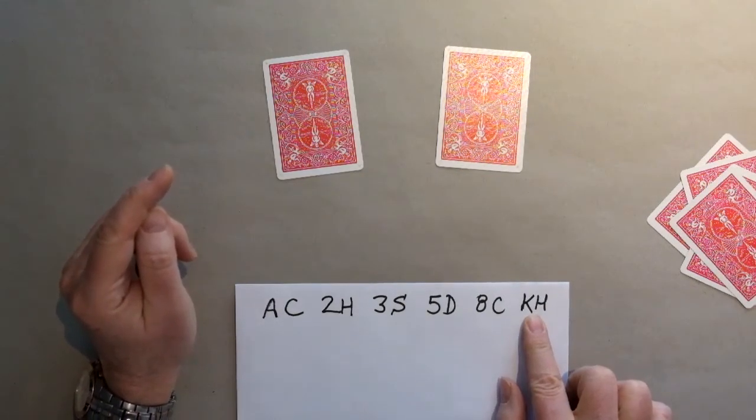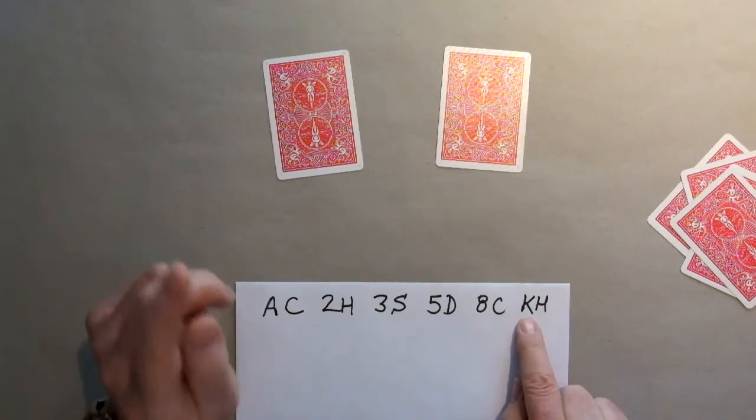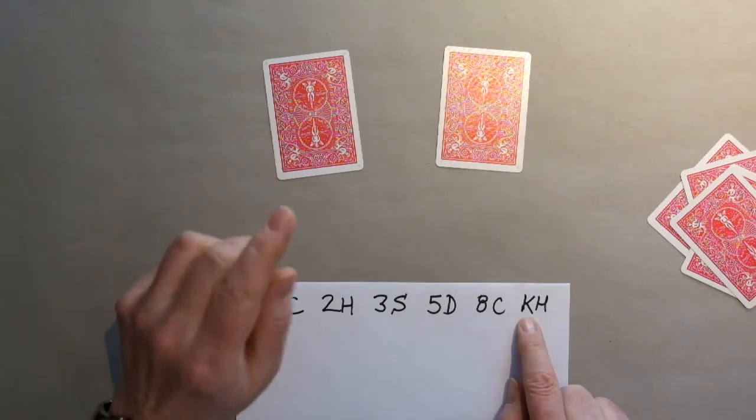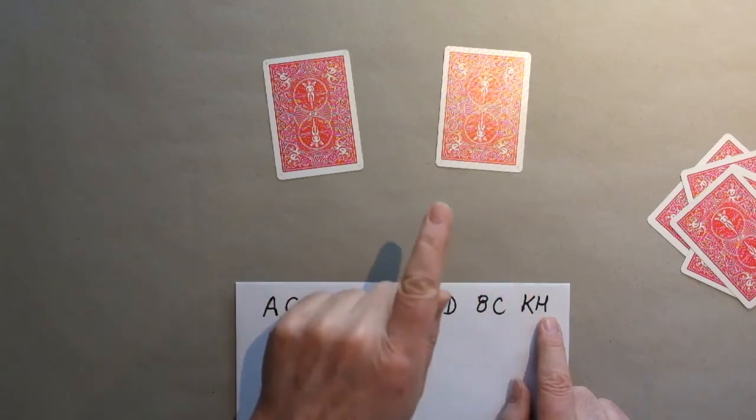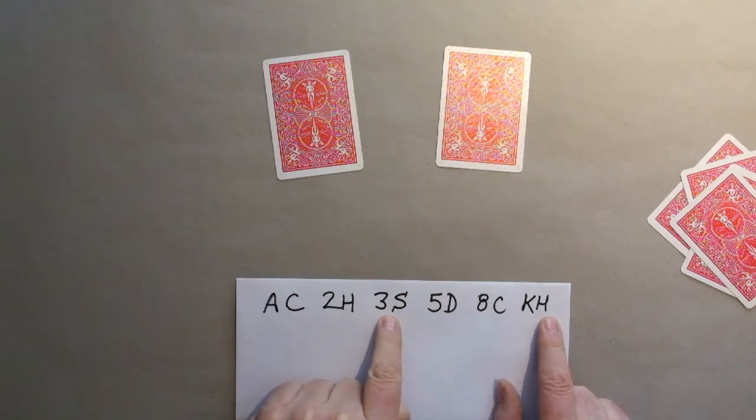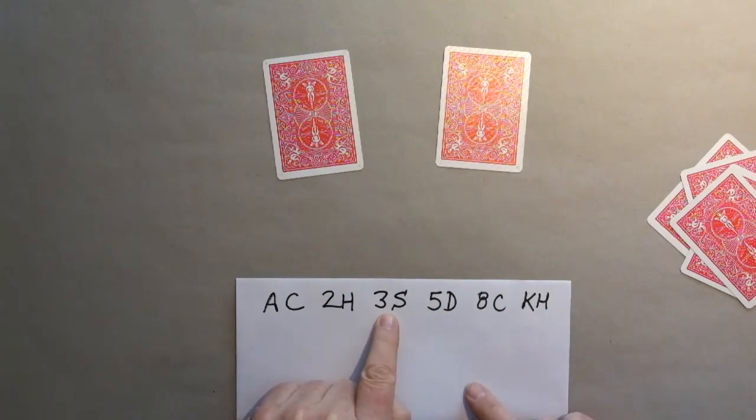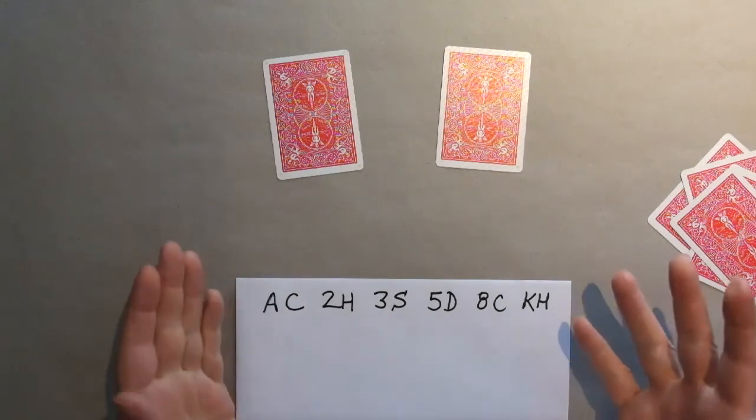To get the other card, just subtract the king's value from the total they gave you. They said 16 for a total. 13 minus 16 is 3. So, now you know the second card is the three of spades. That's all there is to it.